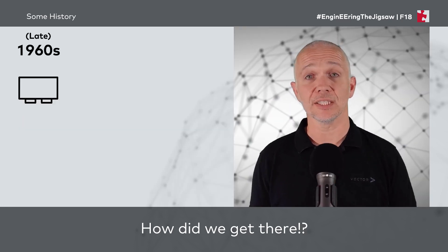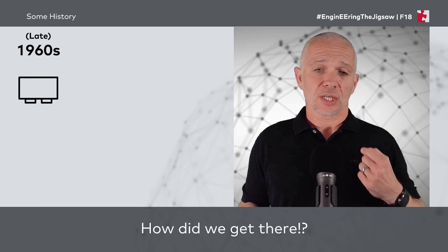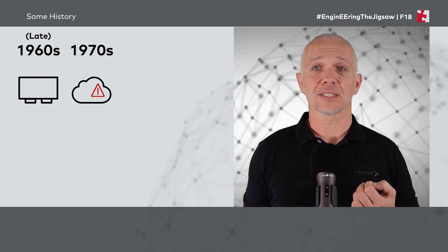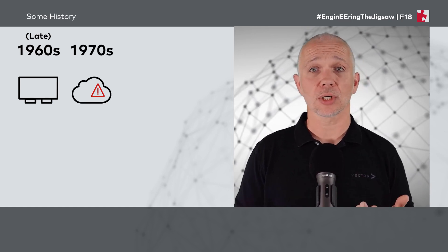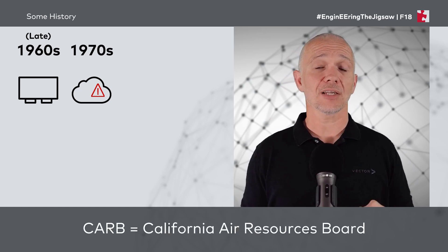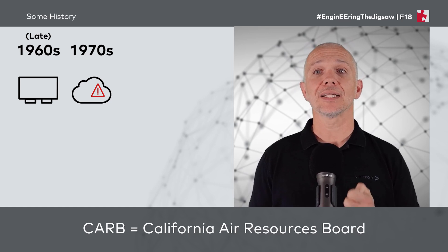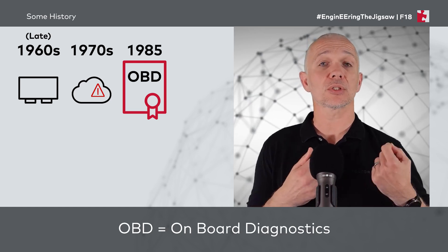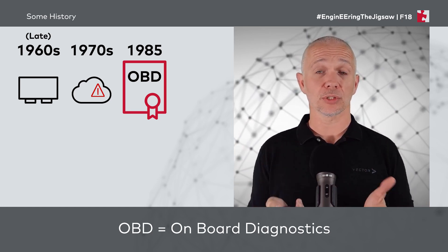Well, in the late 1960s is actually when the very first ECUs came into vehicles. Of course, as people started to drive vehicles more and more, particularly in the 1970s and early 1980s, pollution started to become a larger problem, particularly in California where CARB, the California Air Resources Board, decided to take action. And they took action in 1985 by publishing requirements for onboard diagnostics for emissions control purposes to try to reduce pollution from vehicles.